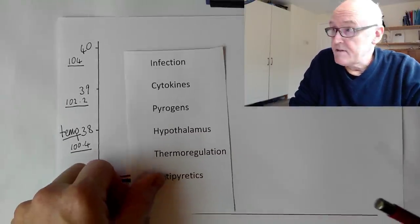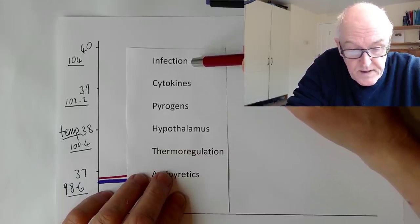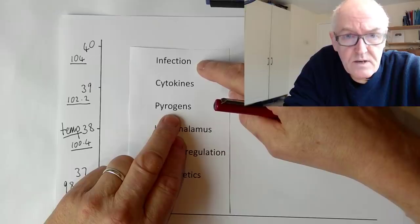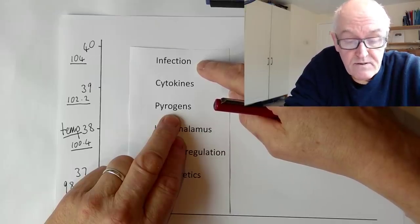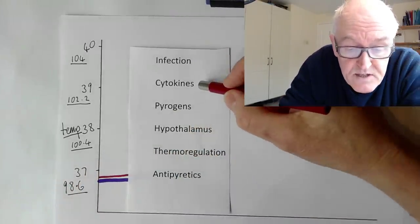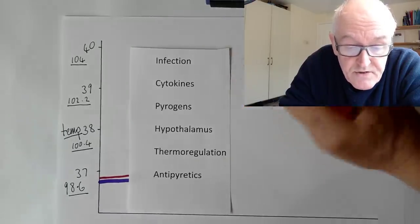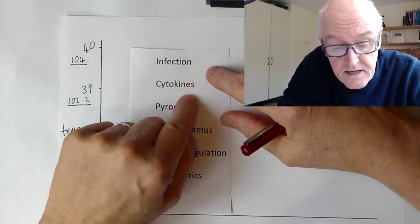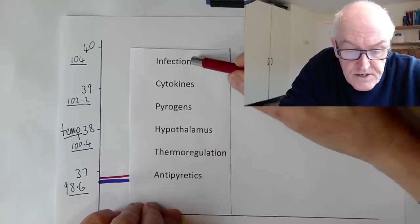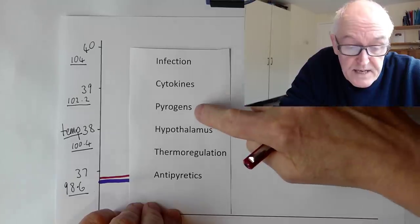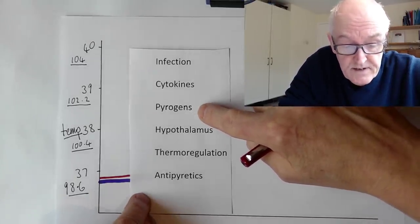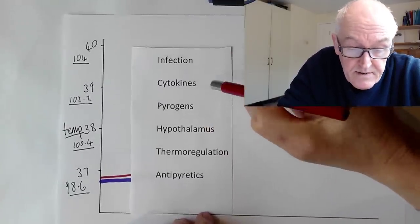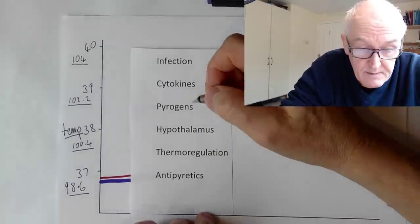Now if there is infection, there'll be pyrogens — pyro is heat, gen is beginning, so pyrogens begin heat. Viral infection or bacterial infection work as exogenous pyrogens; they can affect the hypothalamus from outside. But the main thing that happens is the viruses and bacteria are detected by the body's white blood cells — the leukocytes — and the white blood cells release cytokines. Cytokines are a chemical transmitter that goes between different cells — cyto means cells, kine from kinos meaning movement. The viruses and bacteria affect the white cells and the white cells release the cytokines, and the cytokines affect the hypothalamus quite significantly.